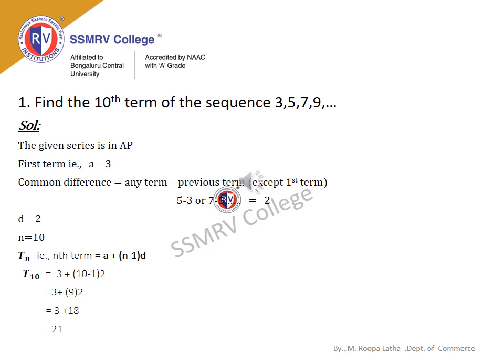Problem: Find the 10th term of the sequence 3, 5, 7, 9, and so on. The given series is in arithmetic progression. The first term a = 3. The common difference d = 5 − 3 = 7 − 5 = 9 − 7 = 2. n = 10. Using tₙ = a + (n−1)d, substituting: 3 + (10−1) × 2 = 3 + 9 × 2 = 3 + 18 = 21. Therefore, the 10th term t₁₀ = 21.